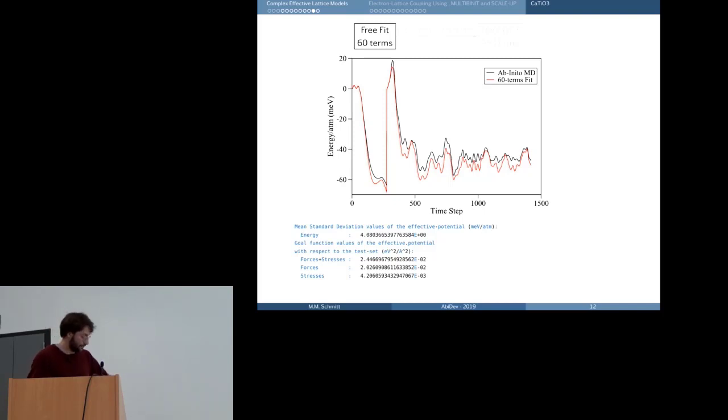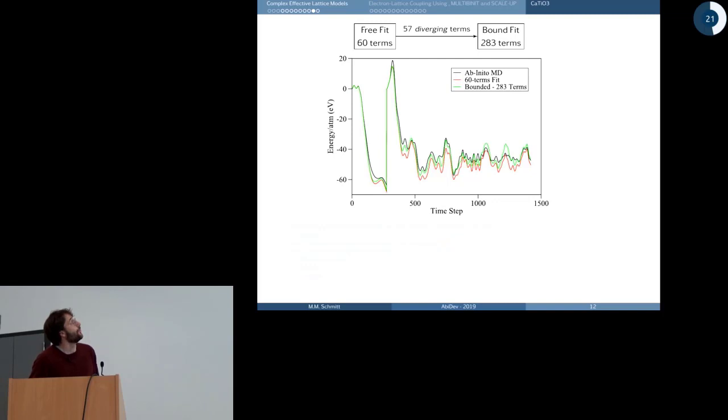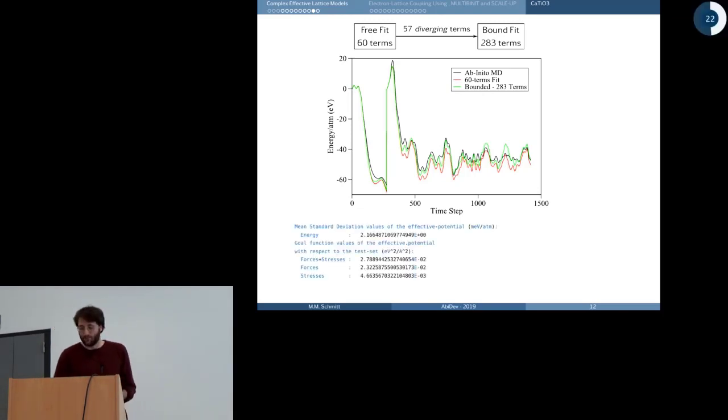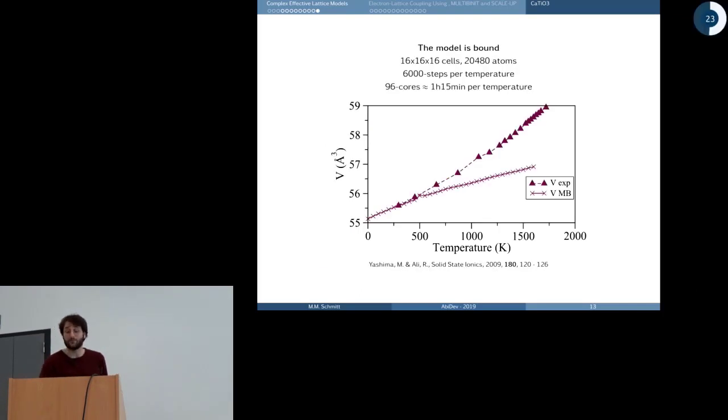So for the calcium titanate model, we had 60 terms. If I run the algorithm, I find that actually almost all of them are odd or even with a negative coefficient, and then I find 283, or about 220 more terms, to bound that potential. And we see that the algorithm works in the sense that now the green line is still very close to the initial data. It's even, in respect to the energy, a bit better, but we lose on the forces, on the stresses in precision. Now this model is bound.